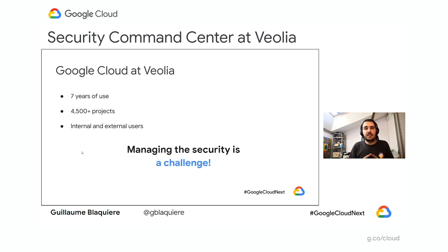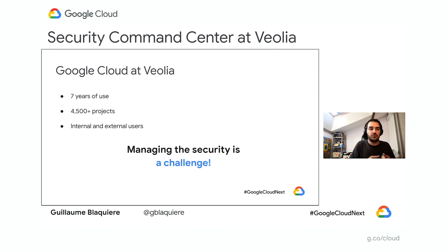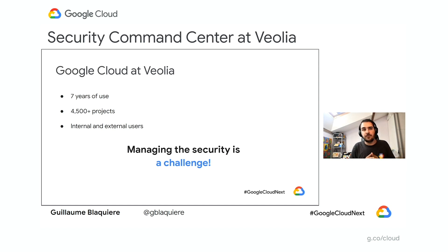Managing security is a challenge for us because we are a small team in Paris with a lot of people, a lot of countries, several time zones, and several different affinities with security. For example, when we have to review firewall rules to see what is open too widely, we perform batches every three months and review all the firewall rules. We contact the project owner to review whether each rule is normal or not, and to fix it or whitelist those rules. It's a lot of work every three months — time consuming — and in three months, a lot can happen.